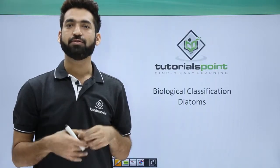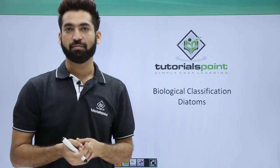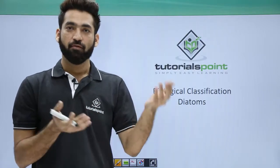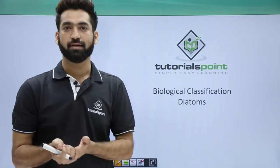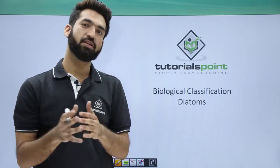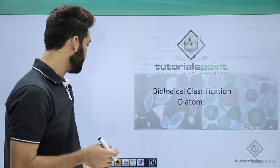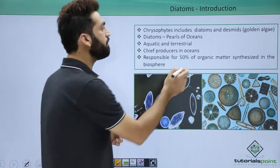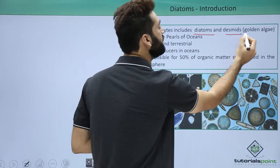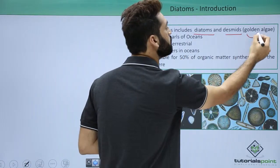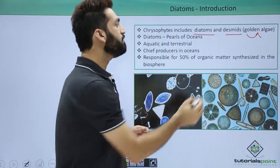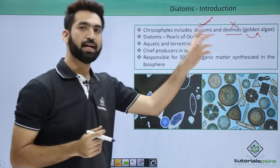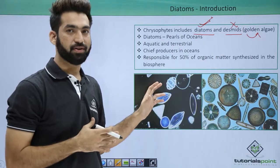In this session we'll be discussing chrysophyta members. Chrysophytes are basically two types: diatoms and desmids. Desmids are also called golden algae, but we don't have desmids in the syllabus. We'll only be talking about diatoms in this particular session.